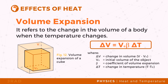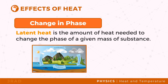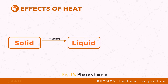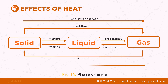Another effect of heat is the change in phase. Latent heat is the amount of heat needed to change the phase of a given mass of a substance. When a substance undergoes a phase change, heat is either absorbed or released at a constant temperature. The energy absorbed or released is used to rearrange the molecules of the substance instead of changing the temperature. When phase transitions involve melting, evaporation, and sublimation, heat is absorbed at a constant temperature, while for reverse processes such as condensation, freezing, and deposition, heat is released.